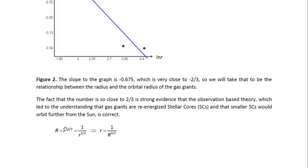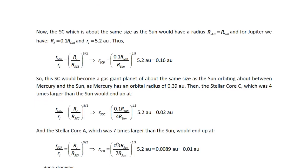Now, starting from the relationship we obtained by plotting the data, we have then that capital R is r to the power of minus 2 over 3, which is equal to 1 over r to the 2 over 3. And that means we can solve for the r. We just take this to the power of 3 over 2. r to the 3 over 2 is equal to 1 over R. And then the r becomes 1 over R to the power of 3 over 2, which is the same as 1.5. Now, the stellar core, which is about the same size as the Sun, would have a radius which is equal to the radius of the Sun. And for Jupiter, we have radius of Jupiter is 0.1 times radius of the Sun, and the orbital radius for Jupiter is 5.2 AU.